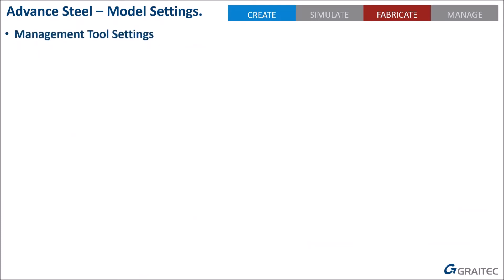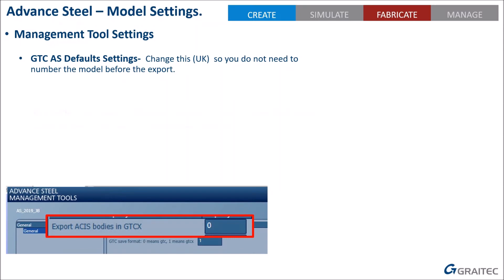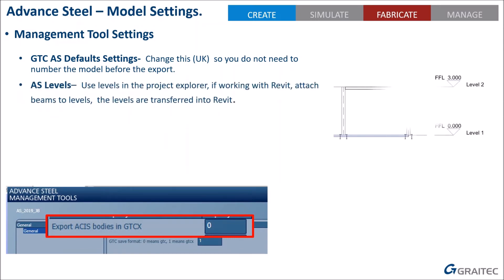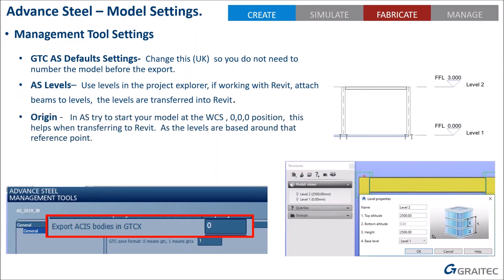On the Advanced Steel side, there's a management tool setting that needs to be set to allow transfer without the need to number the model — worth checking, as it seems to default differently in some regions. For levels: if a beam is on a level in Advanced Steel and transfers to Revit, make sure your Revit template only has one level or the beam may attach to an incorrect level and offset down. The origin is also critical — the model transfer works around the zero-zero-zero world coordinate system point. Work around that origin; there are project offset coordinate options in both platforms if needed.